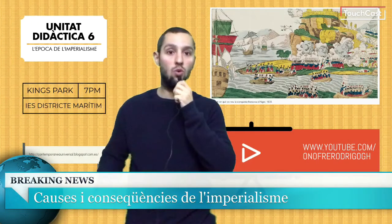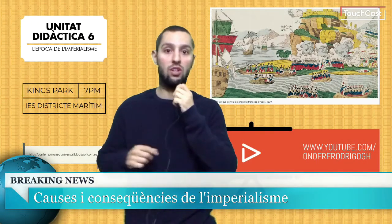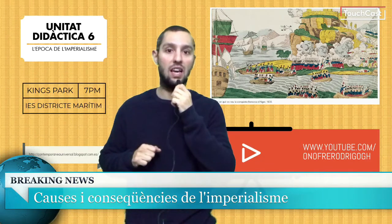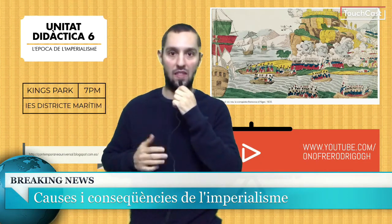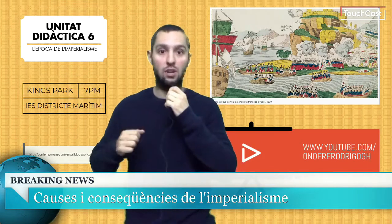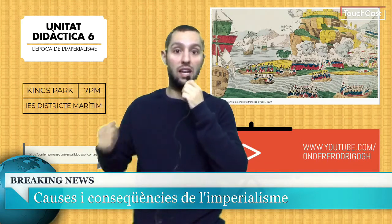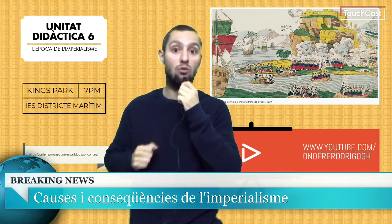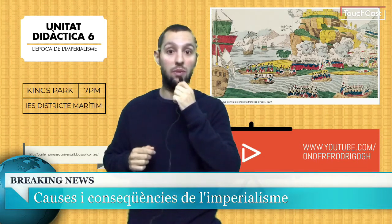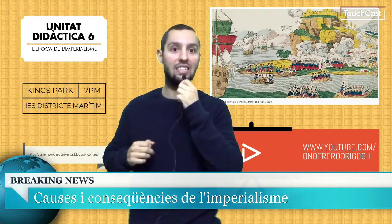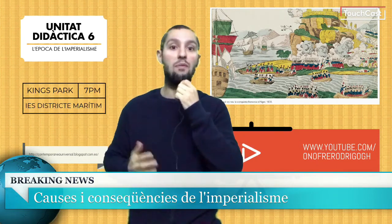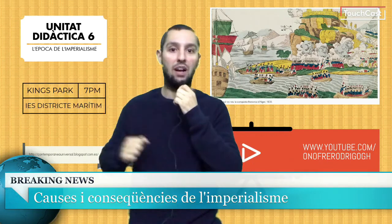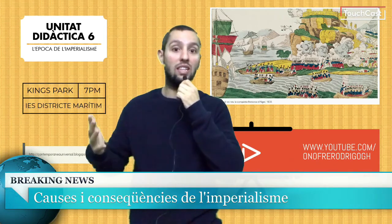Hello everyone, welcome to a new video tutorial. We are in the contemporary history of the 4th of ESO, which corresponds to the time of imperialism. During this video we will talk about the main causes and consequences of this phenomenon, produced at the end of the 19th century, that marks international relations and the life of a large part of the planet during the 20th century.